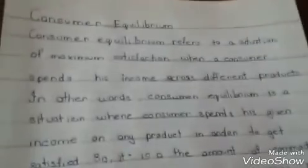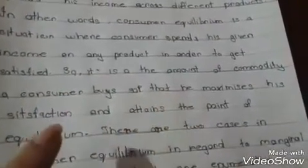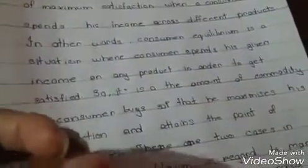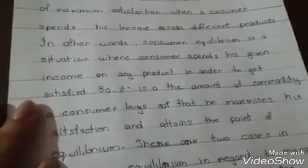It is the amount of commodity a consumer buys so that he maximizes his satisfaction and attains the point of equilibrium. In short, consumer equilibrium is the amount of commodity purchased that maximizes satisfaction and helps the consumer attain the equilibrium point.